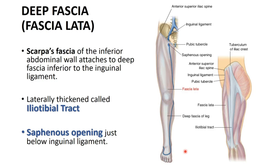Another important point: just below the inguinal ligament, the fascia lata receives the attachment of Scarpa's fascia. So the Scarpa's fascia of the anterior abdominal wall is attached to the fascia lata just inferior to the inguinal ligament.